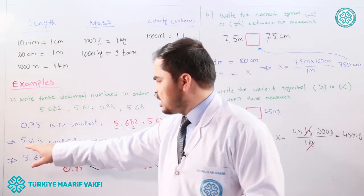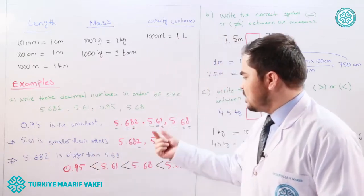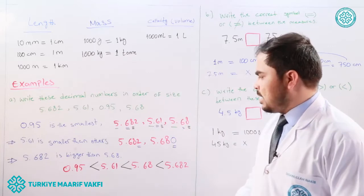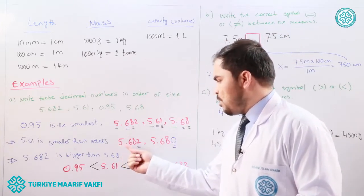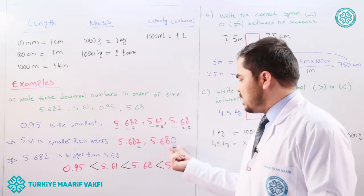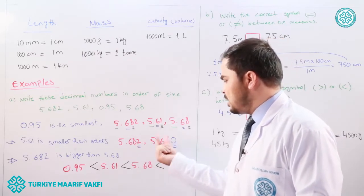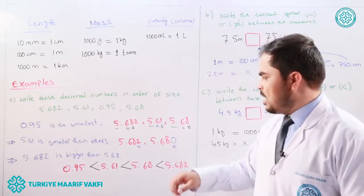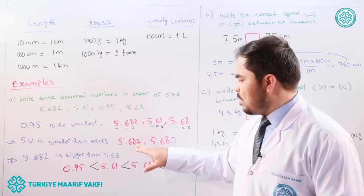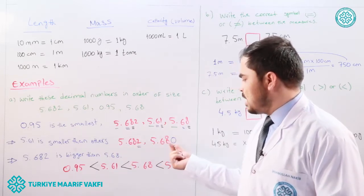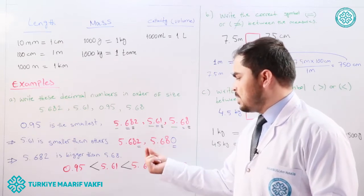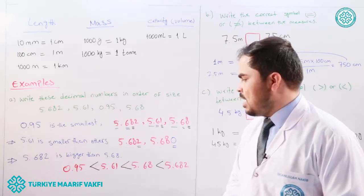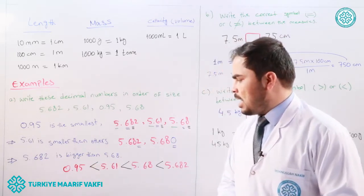Since one is smaller than eight, five point six one is the smallest of the three remaining numbers. That leaves 5.682 and 5.68. We add a trailing zero to 5.68 to make it 5.680. Now comparing the last digits: two is bigger than zero, so 5.682 is bigger than 5.68.